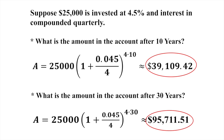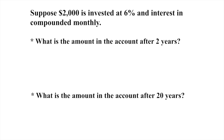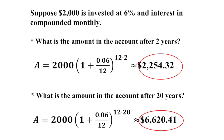Check your answers on the practice problems. For 4.5%, make sure you convert it to 0.045 — typing 4.5 directly would give 450%, producing a huge wrong answer. For the problems compounded monthly, your n value should be 12. If you missed something, go back and find where the error occurred.